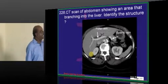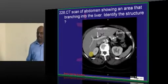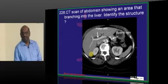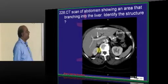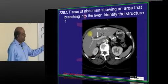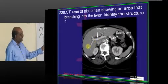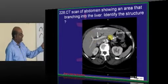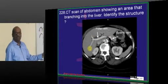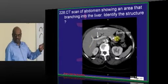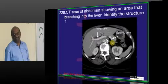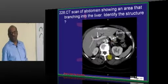On abdominal CT, penetrating the liver, you are able to see a radio-opaque area, which is the portal vein — that is what you need to remember.